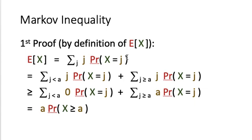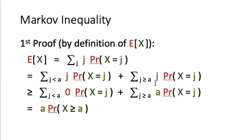We now have two summations. For the first part, j is less than a, but since X takes only non-negative values, j is always greater than or equal to zero. So we replace j with zero in the first summation, maintaining the greater-than-or-equal-to relationship. For the second summation, every value of j is greater than or equal to a, so we replace every j with a, again maintaining the inequality.